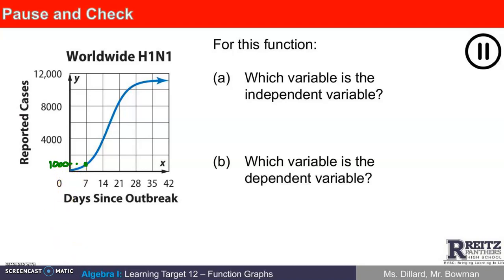The question here is which variable is the independent variable? Well, that's the one on the horizontal axis. It would be the number of days since the outbreak.